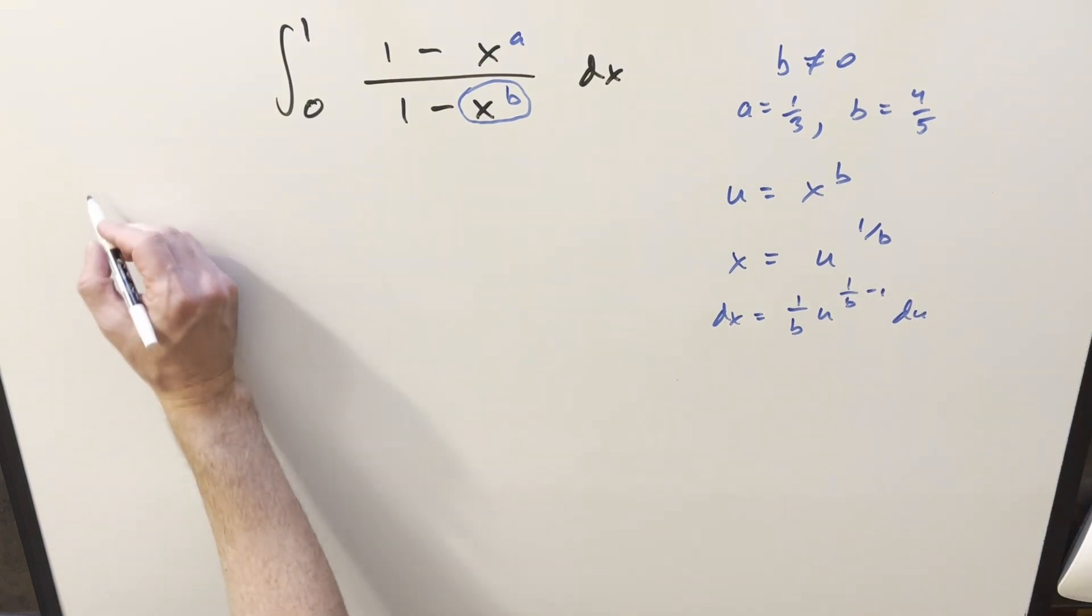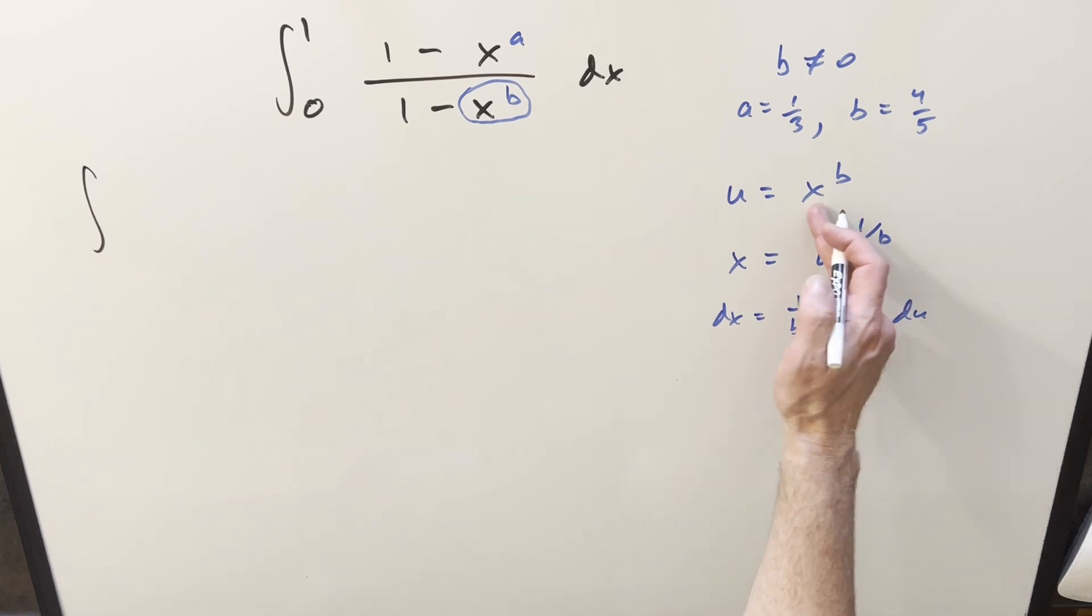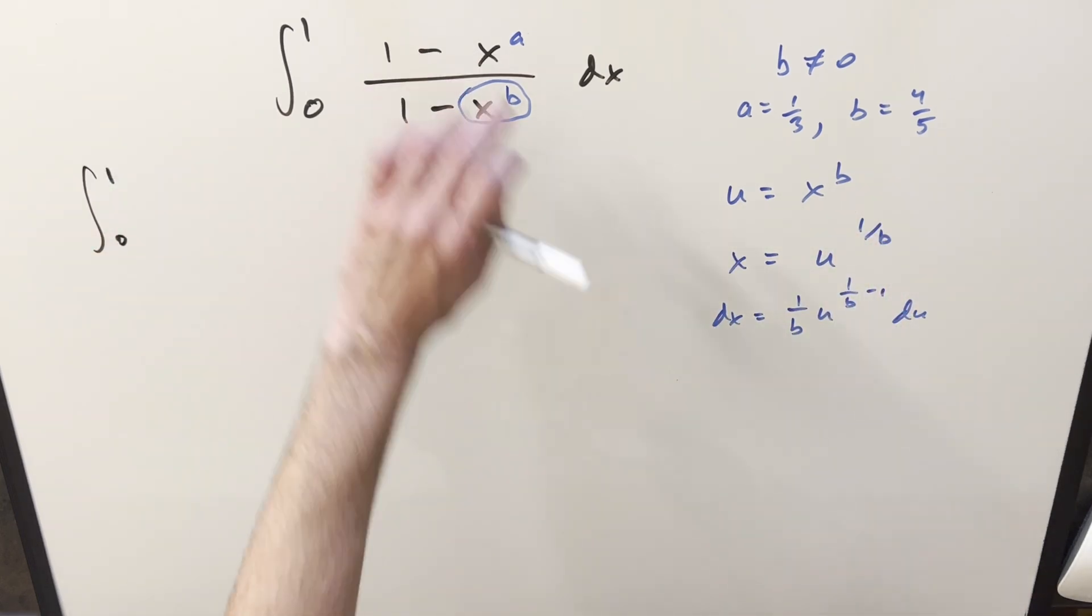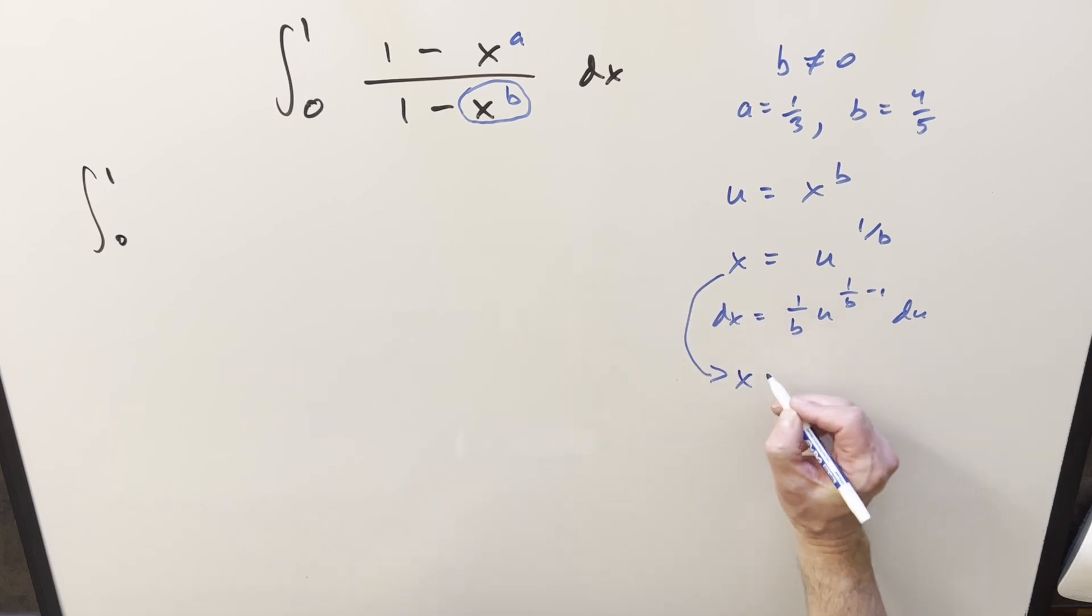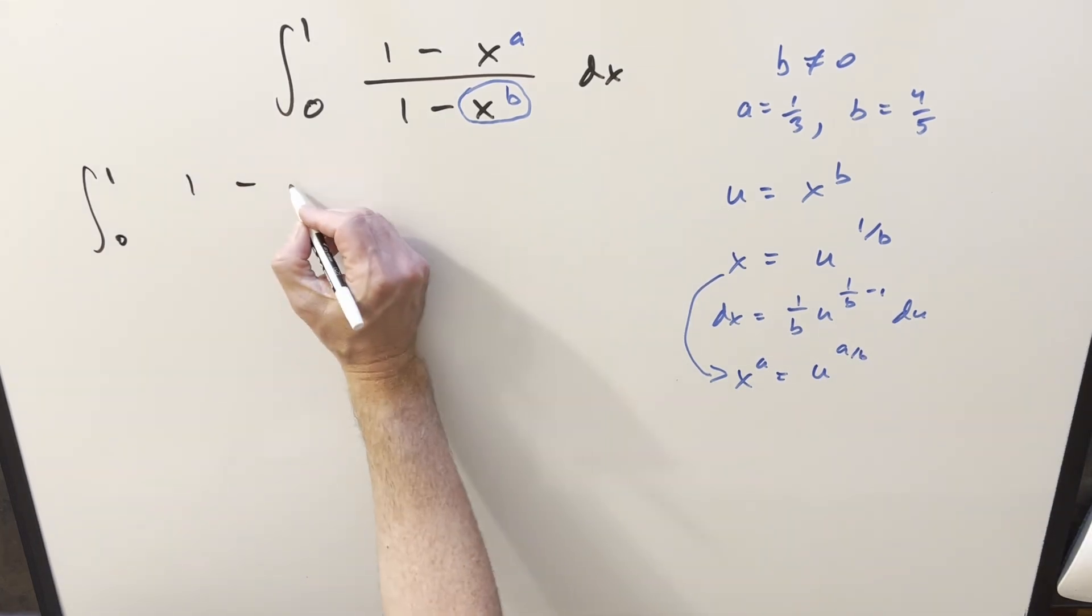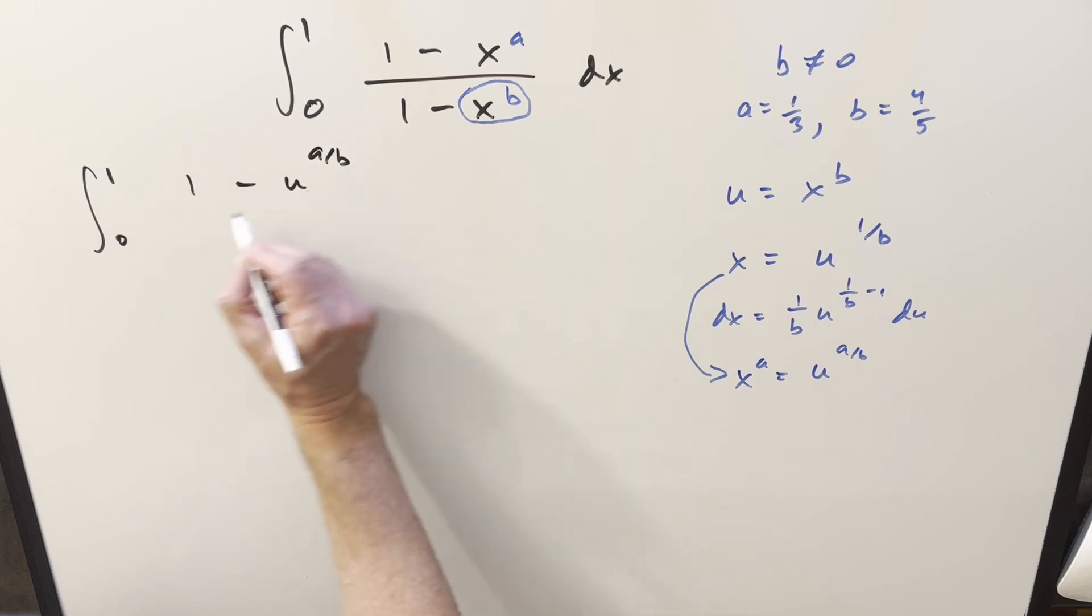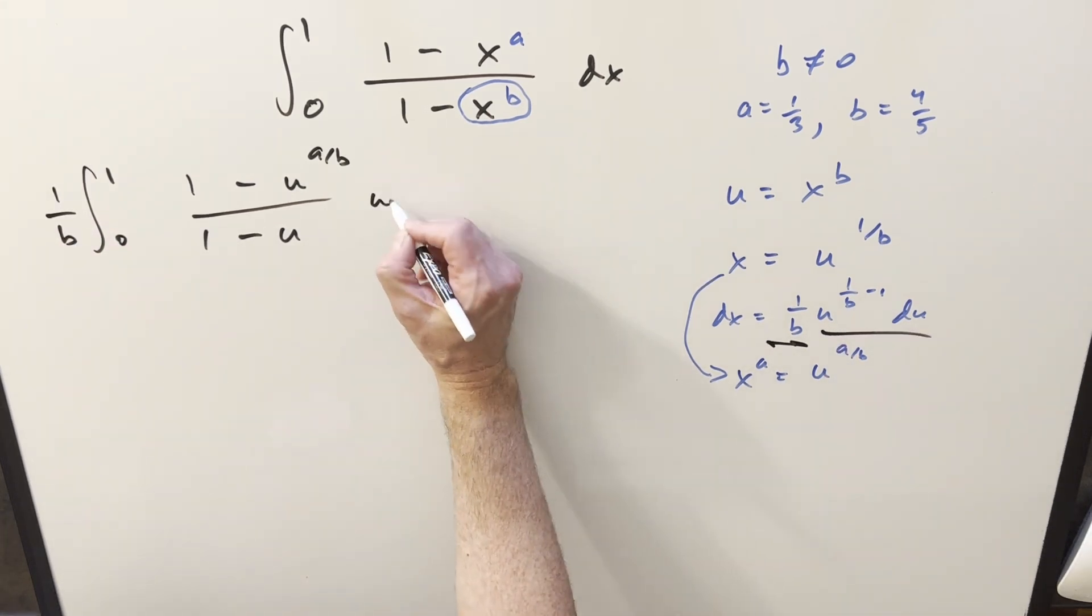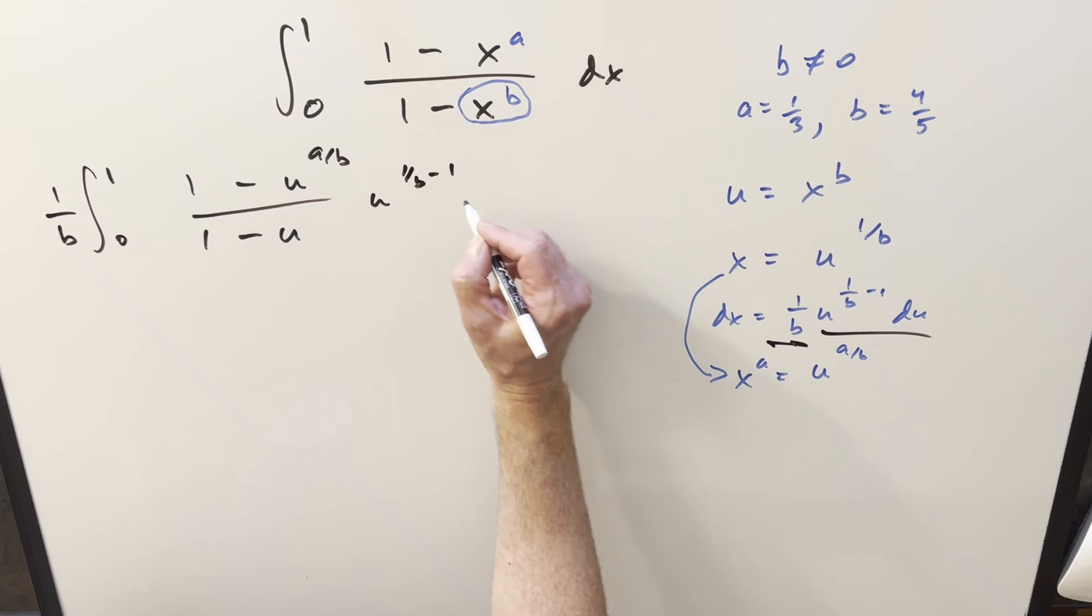We'll go ahead and substitute. First noticing the bounds are going to stay the same. 1 is 1, 0 is 0. So we'll just bring that over. And let me actually get an x to the a value. If we just take this, raise both sides to the a, we get x to the a is going to be u^(a/b). So then plug everything in. Now we can use this right here. This will be u^(a/b). The denominator just becomes 1 minus u. Now for our dx value, let's take 1/b out front as a constant, and then we'll have the rest of it u^(1/b - 1) du.